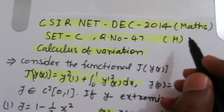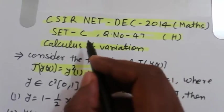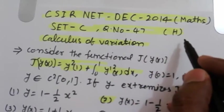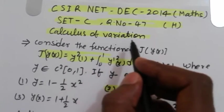CSIN 8 December 2014 Maths Set C Question No. 47, Medium Hindi. Problem: Calculus of Variation.